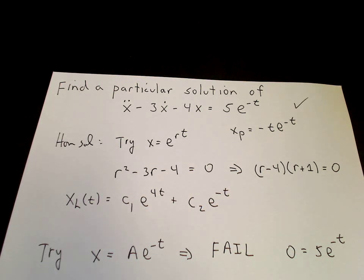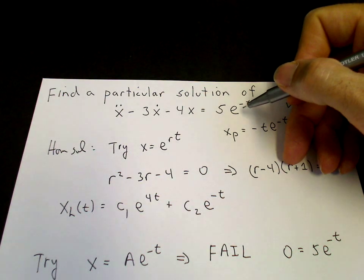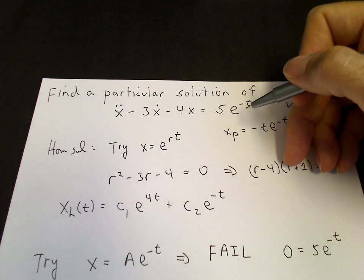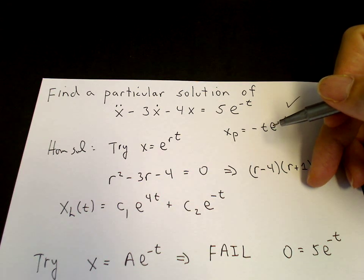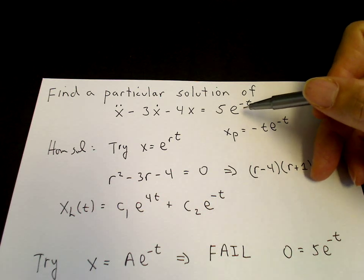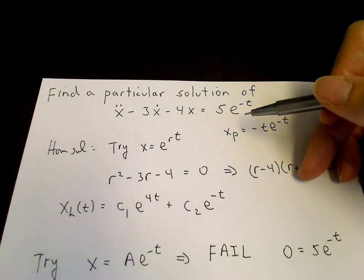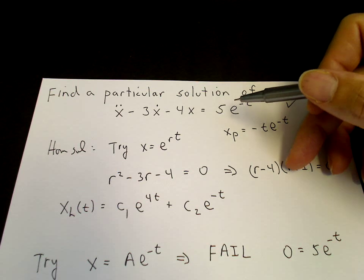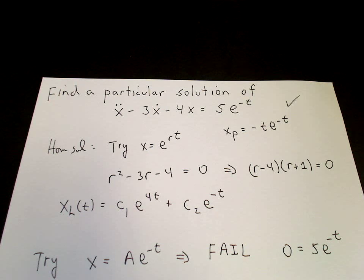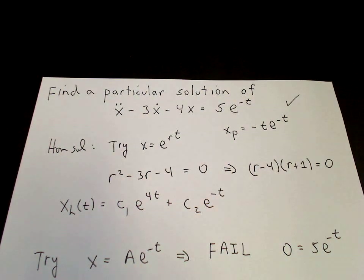In summary: if the inhomogeneous term is a solution of the homogeneous equation, you cannot use it times a constant as your ansatz because it will go to 0. You must multiply by t. This is equally true when the exponential factor is complex — that is, a real exponential times a cosine or sine. If the complex exponent is a solution of the characteristic equation, you have the same problem and must multiply by t.